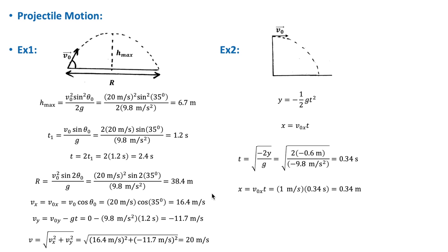Let's consider another example in which an object is thrown horizontally from a table of height 0.6 meters with an initial horizontal velocity of 1 m/s. We want to find the horizontal distance from the table edge to where it hits the ground.